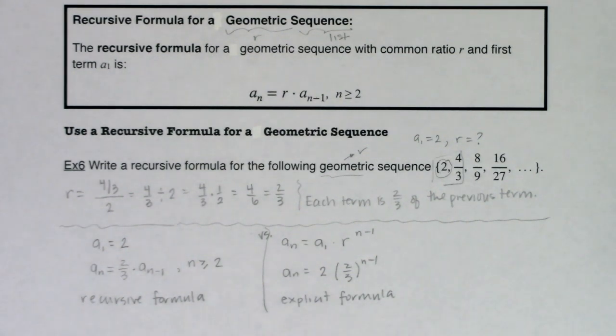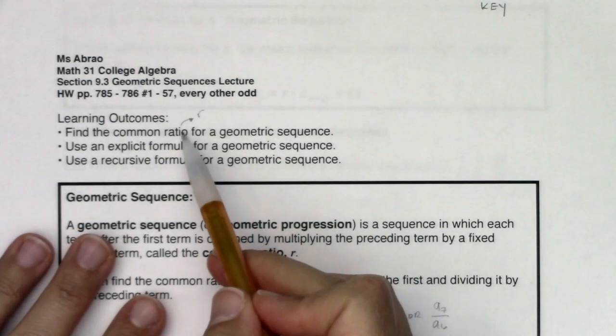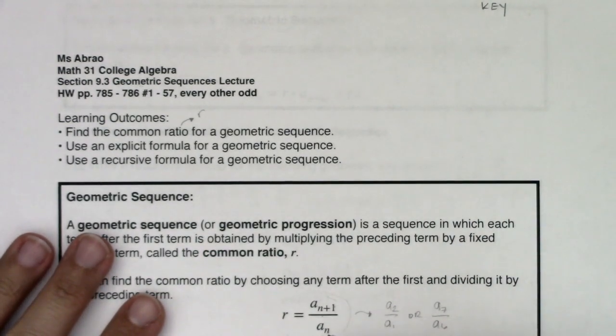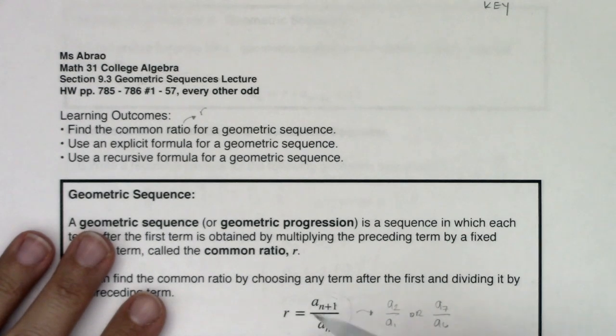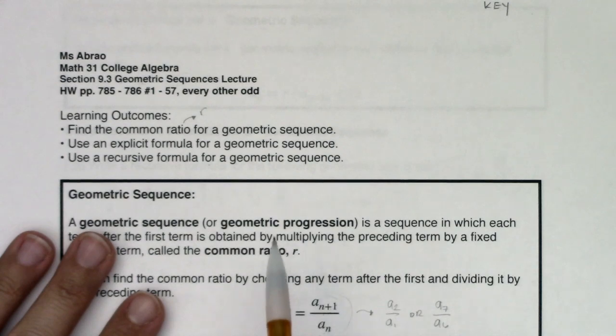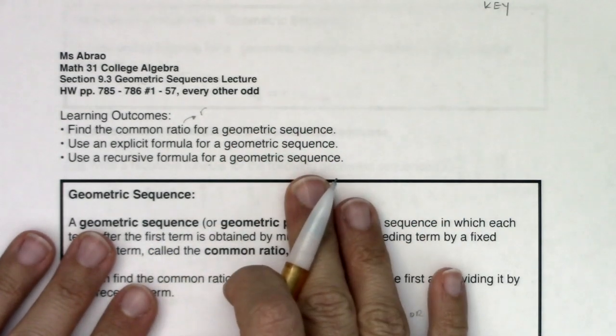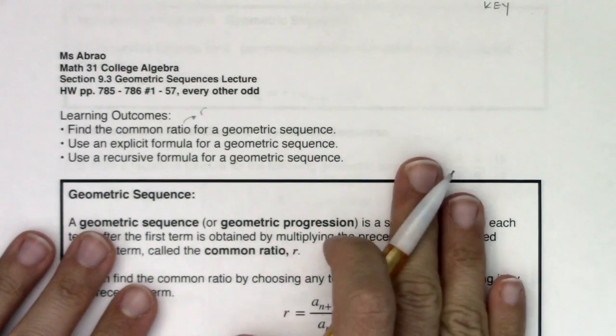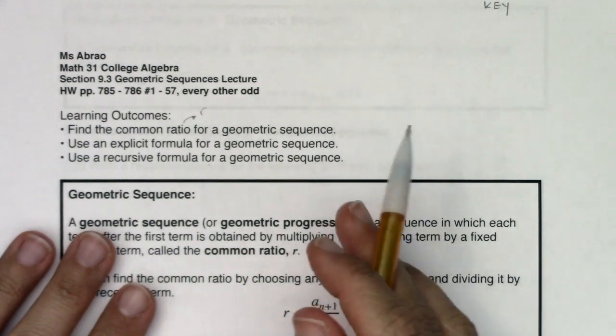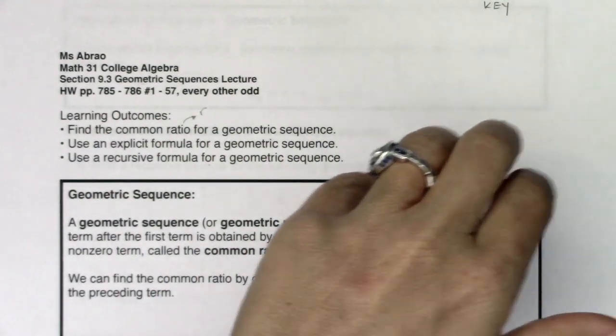So with that, we finished 9.3. We've taken a look at geometric sequences. I'm hoping we're comfortable finding r, that common ratio of your current term in ratio to your previous term, and then using explicit formulas for geometric sequences and recursive formulas for geometric sequences. Because where we're moving next is we're going to take all these lists and we're going to start adding those sequences. So we're going to add the numbers from the sequence and we're going to call those series.